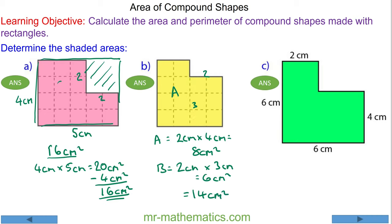Another way of doing question B could be as the difference of two rectangles. We could do 4cm by 4cm for the square, the bigger square. Take away the 2cm squared here. So we have 16cm squared. Take away the 2cm squared. Again, we have 14cm squared.